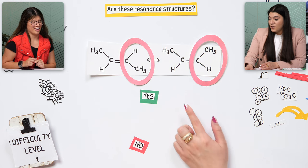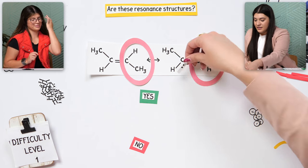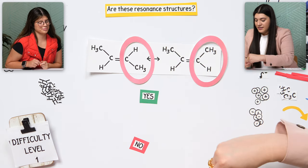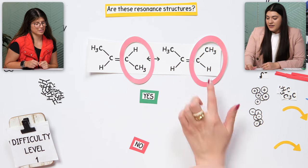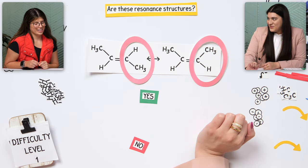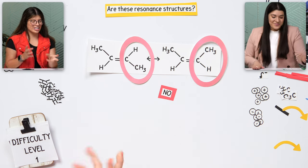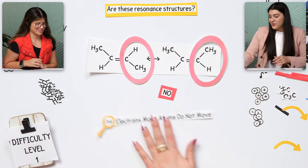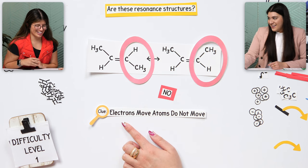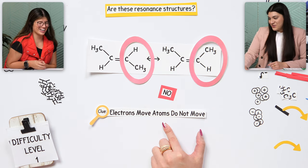Remember, electrons are bonds, really. There are two electrons in a bond, technically. So what really moved? It was actually the hydrogen. So would it be no then? It'd be no — because they changed the whole formula. Exactly. Your clue here: electrons move, atoms do not. And these are atoms — the hydrogen, the CH₃.